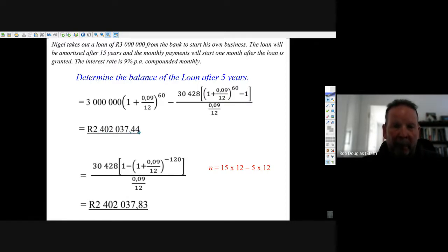Another way of doing it is to take, instead of putting in 15 years, you subtract those 60 from it. 15 years minus 60 means you actually have 120 payments to go. So you go 15 times 12 minus those 5 years, you put in 120 into the present value formula.